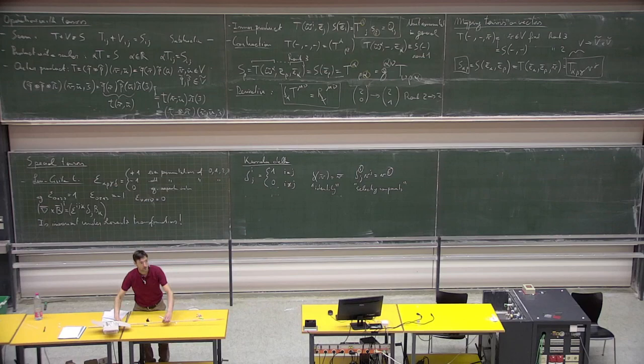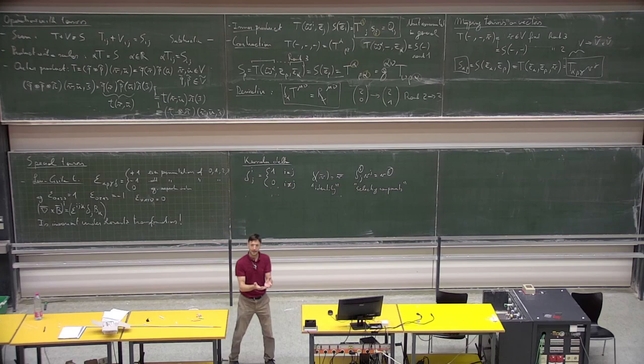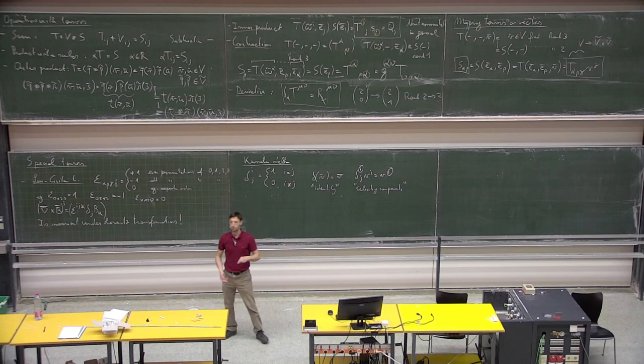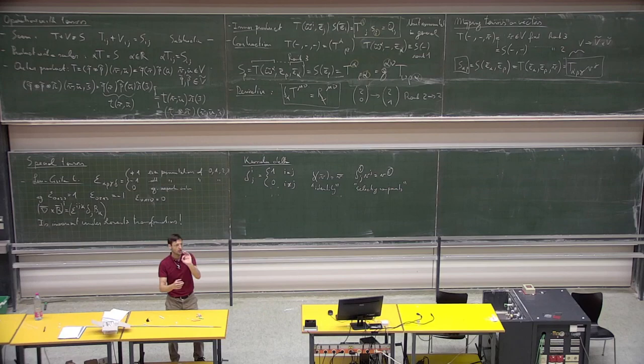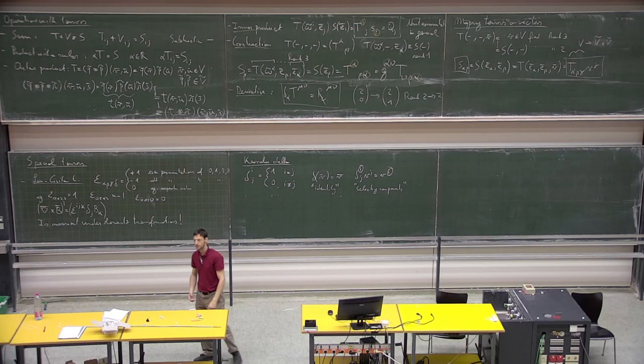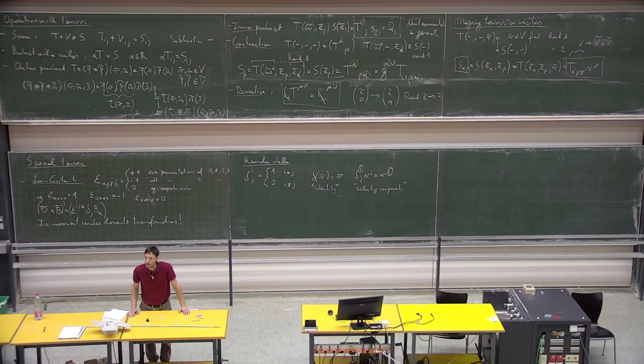Next time we will start with manifolds. We will define the tangent space, which is the space in which vectors live at each point on the manifold. Afterward, we introduce covariant derivatives that allow us to connect vectors at different locations on the manifold. From this we will extract curvature, and from curvature we get Einstein's field equations describing gravity. Next time: curved spaces. Thank you and see you.